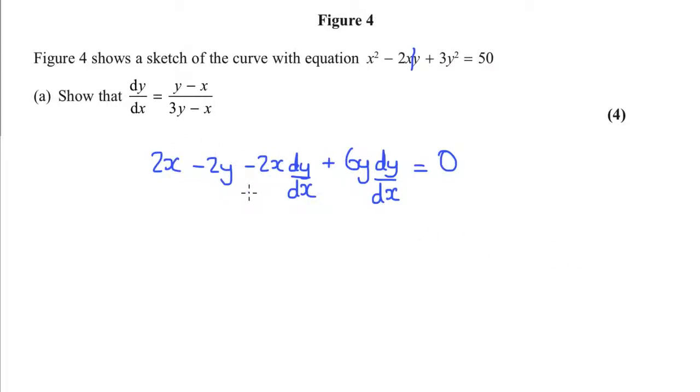Next job is to collect the dy by dx's together, so any term with a dy by dx, that's these two end terms here. So, dy by dx. I've got a 6y, and I've got a minus 2x.